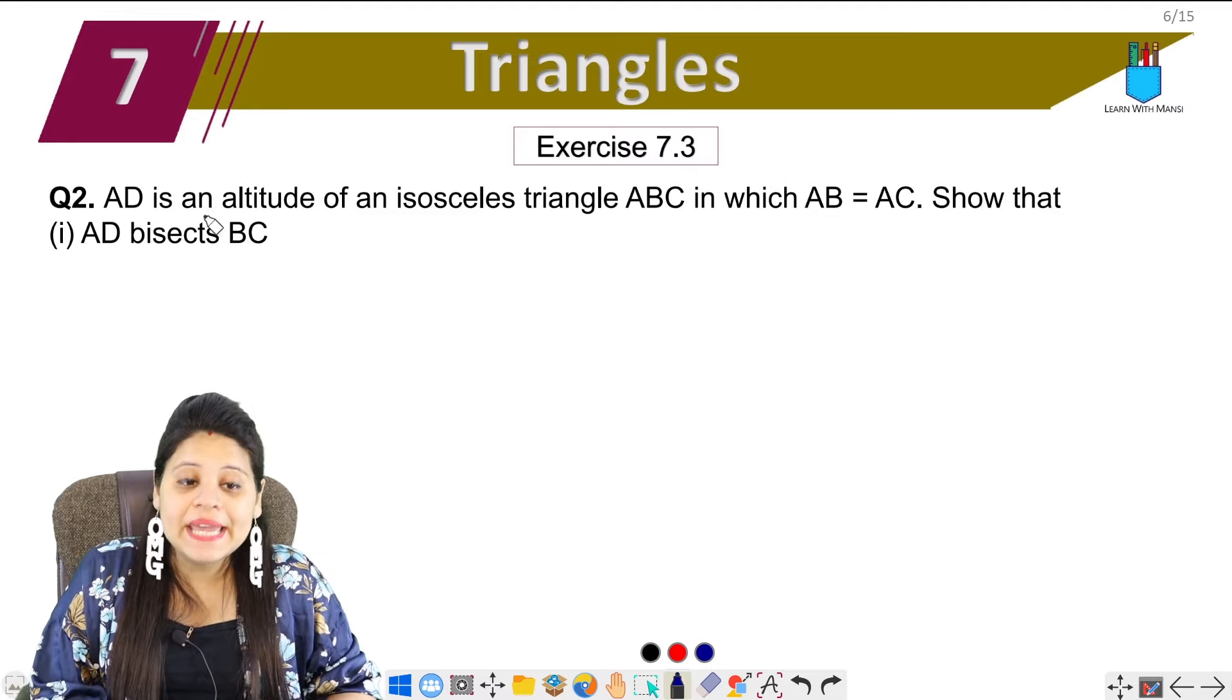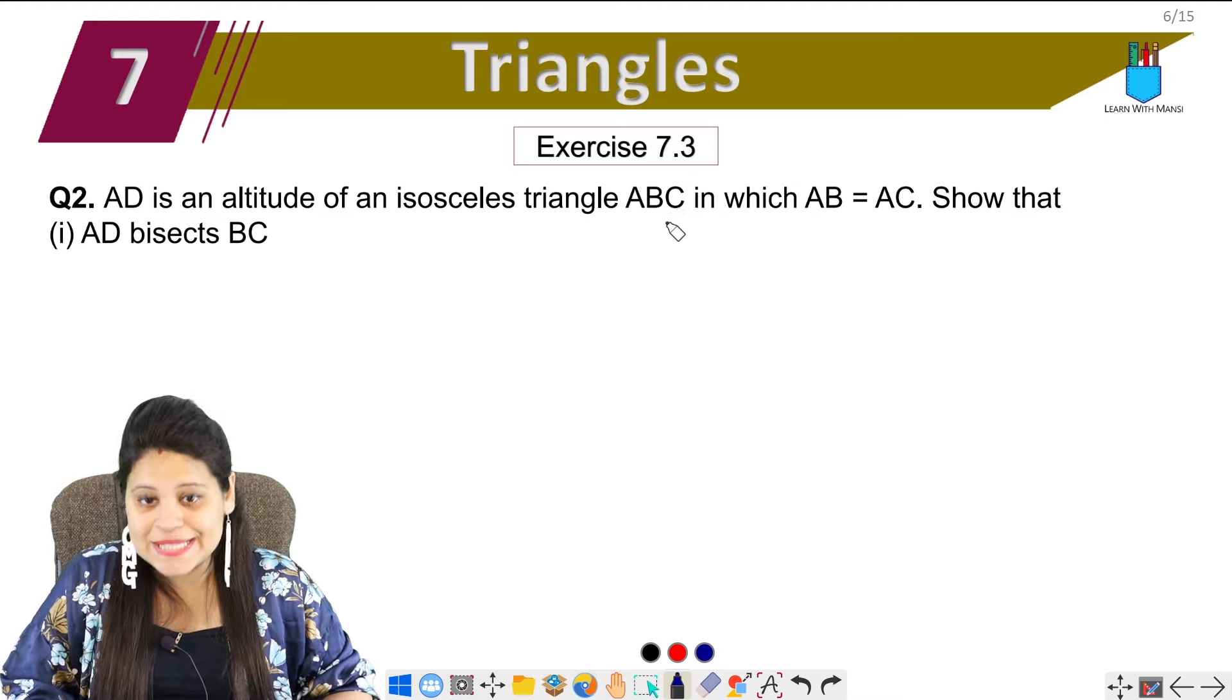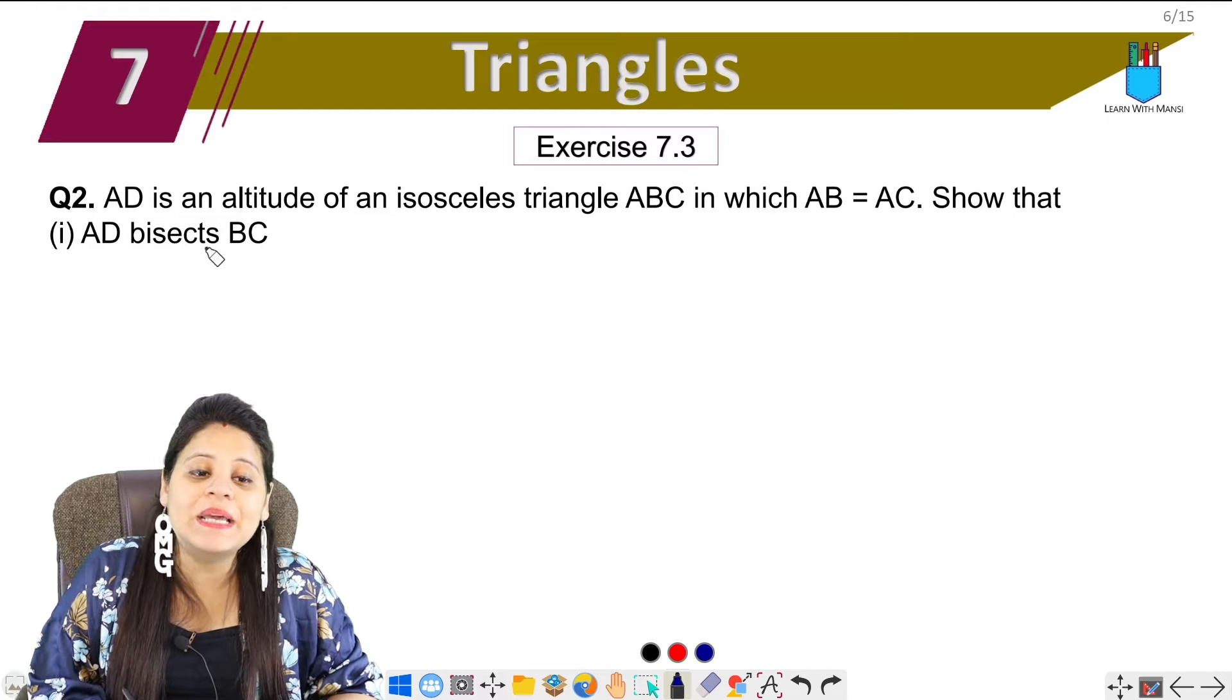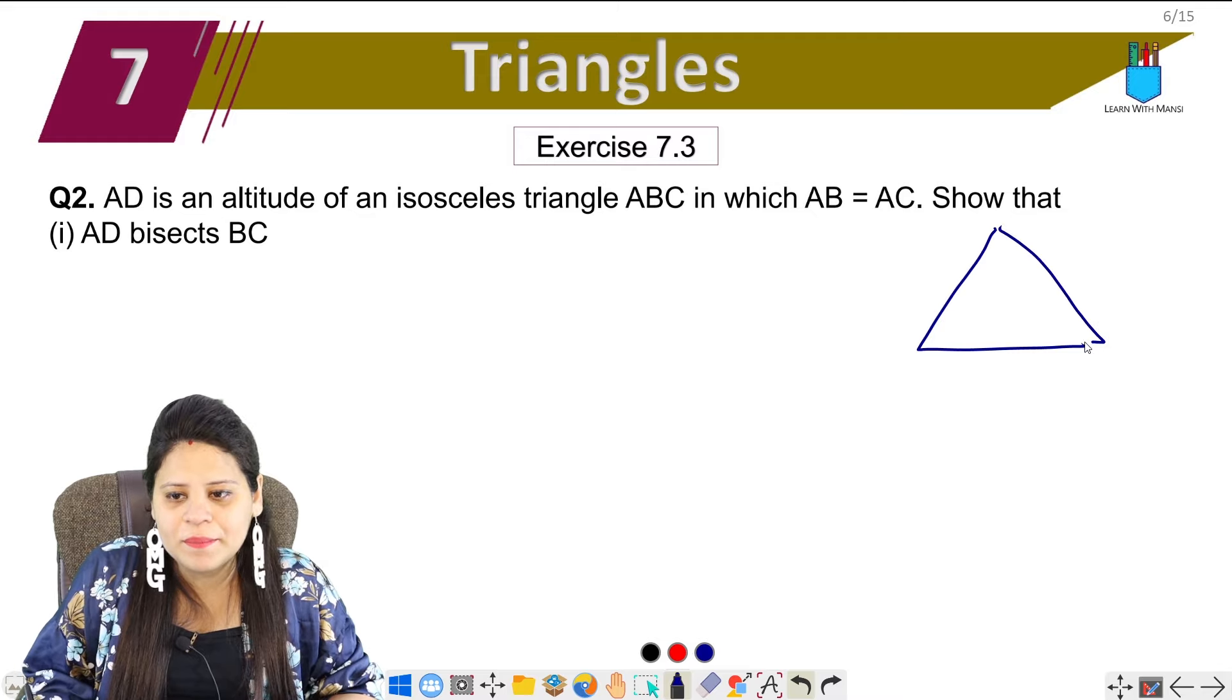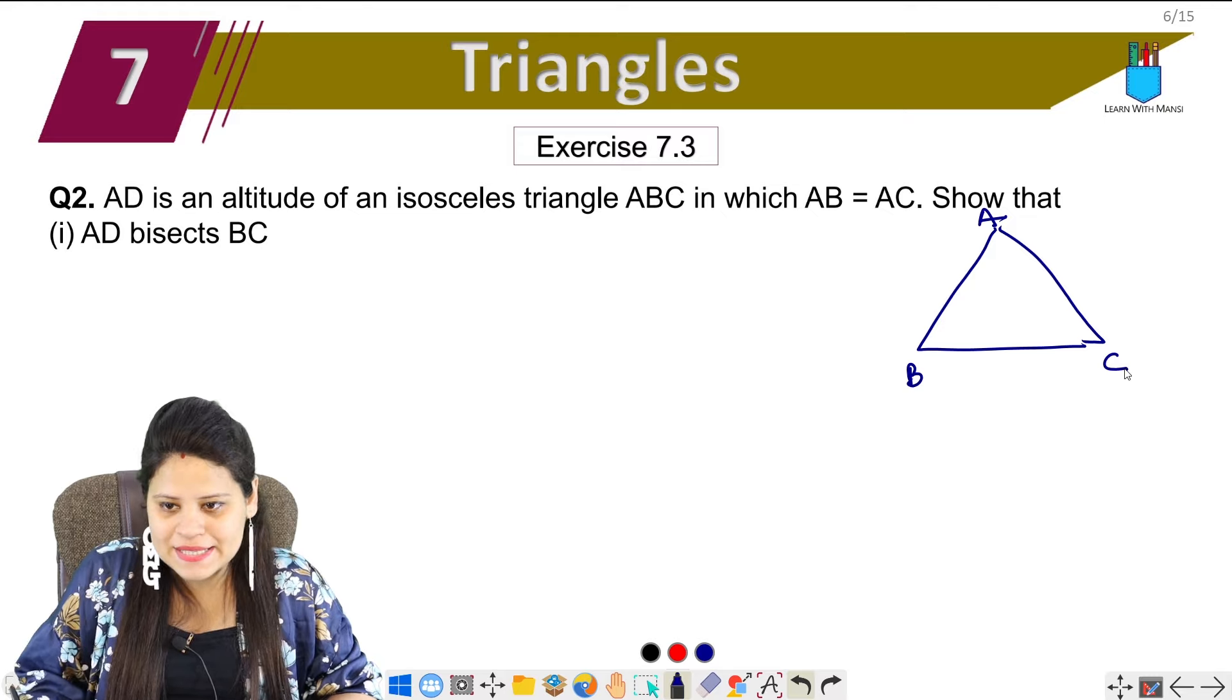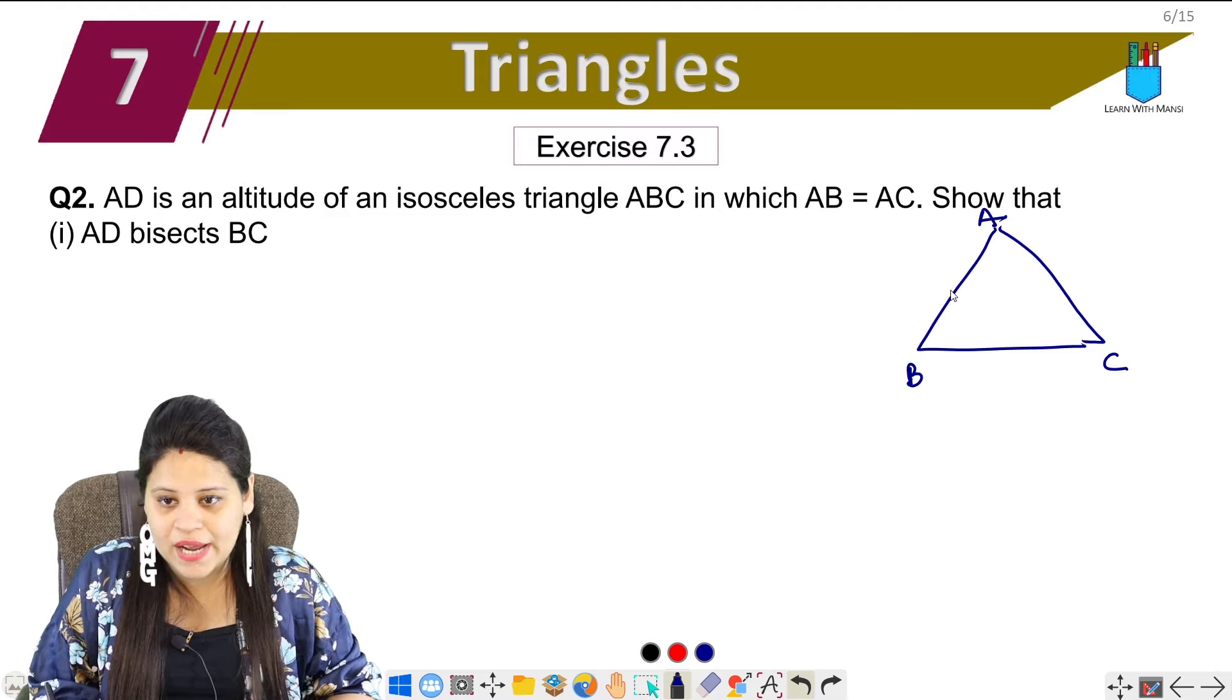The question says, AD is an altitude of an isosceles triangle ABC in which AB equals AC. Show that AD bisects BC. So we have to make a figure first. It's a simple figure. We have to make a triangle. Let's call this ABC. So triangle ABC is an isosceles triangle.